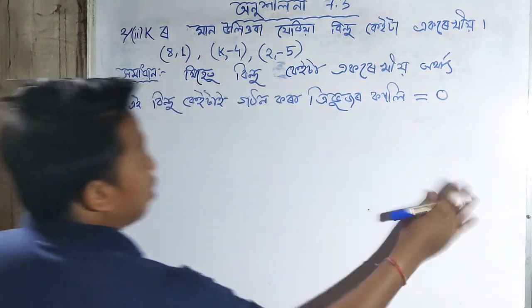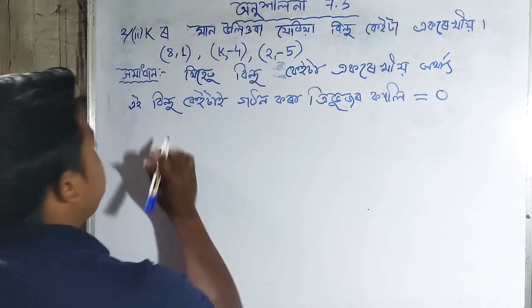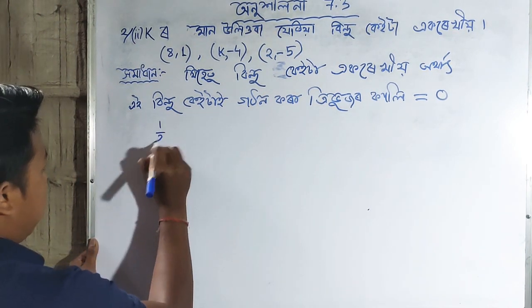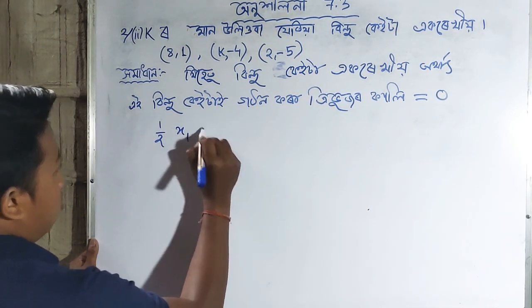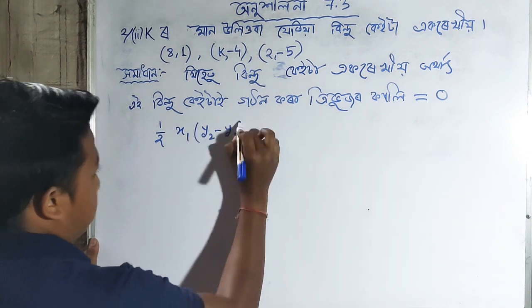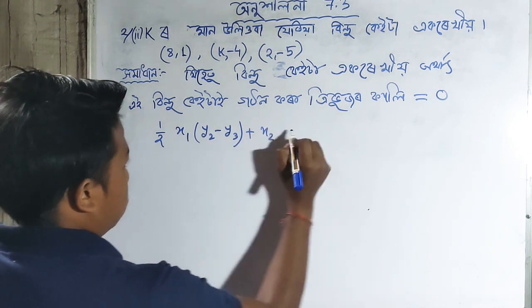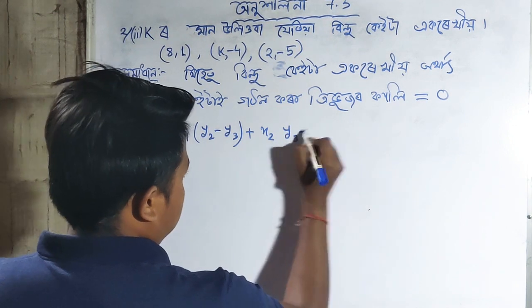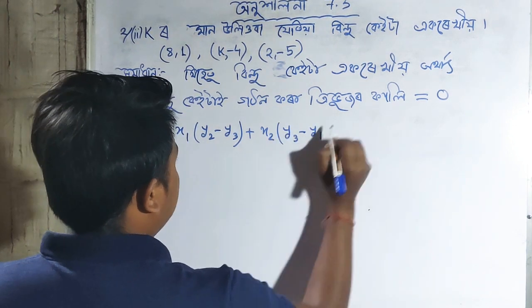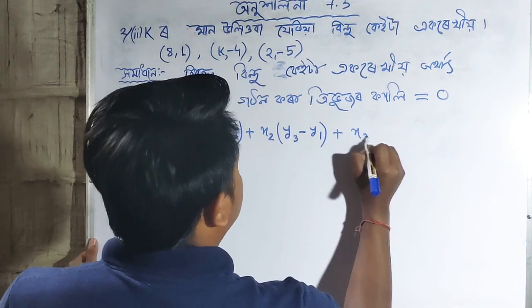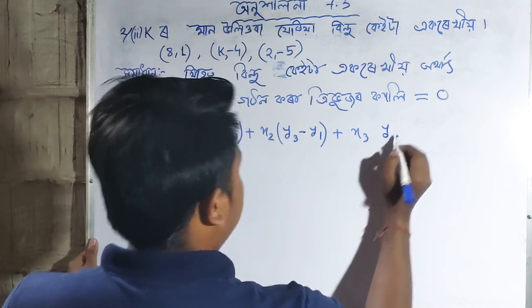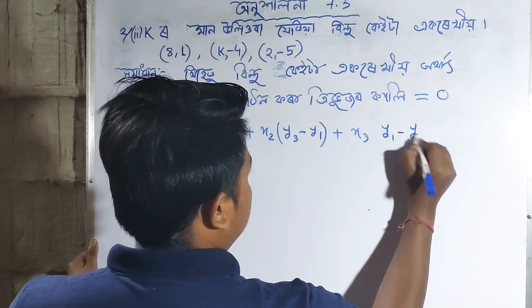The formula for checking collinearity is: one half times [x1(y2-y3) + x2(y3-y1) + x3(y1-y2)] equals zero.